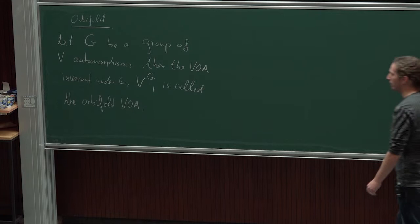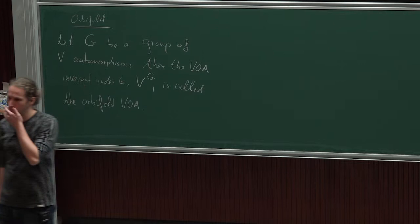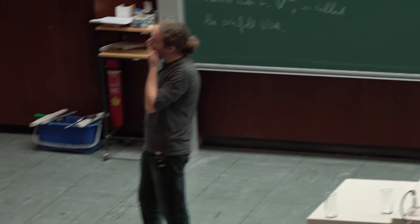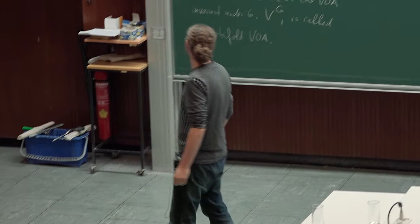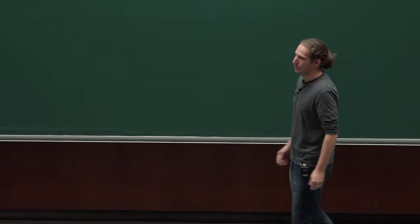Let's assume that G acts semi-simply on V — we usually assume that. In the CFT context, are you assuming that your W algebras at least contain some Virasoro algebra, and probably also that the group of automorphisms preserves the Virasoro algebra, or you don't assume it? I don't need it here yet.